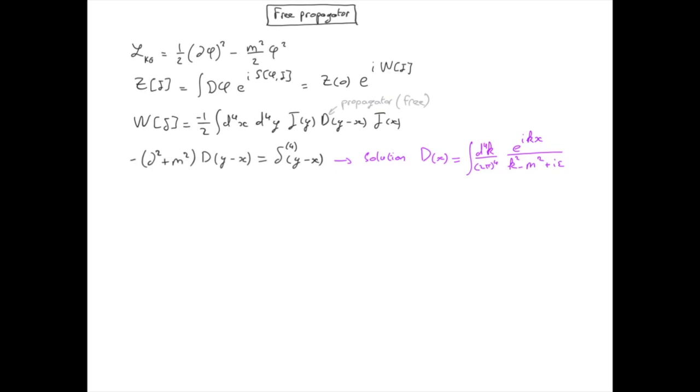I have introduced a small imaginary contribution to the denominator, so epsilon is infinitely small, so that there is never a division by zero because we have an integral over k and k squared minus m squared could be equal to zero. However, because we have i epsilon, we will never hit zero and this integral is well defined.